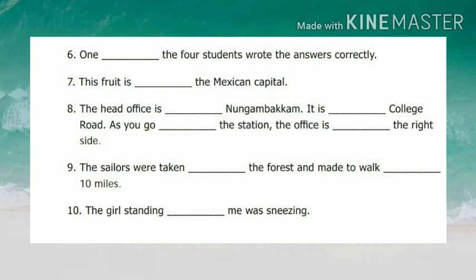Ninth: 'The sailors were taken ___ the forest and made to walk ___ ten miles' — answers: 'throughout' the forest and 'for' ten miles. Tenth: 'The girl standing ___ me was sneezing' — answer: 'before' me. So we use the preposition 'before'.